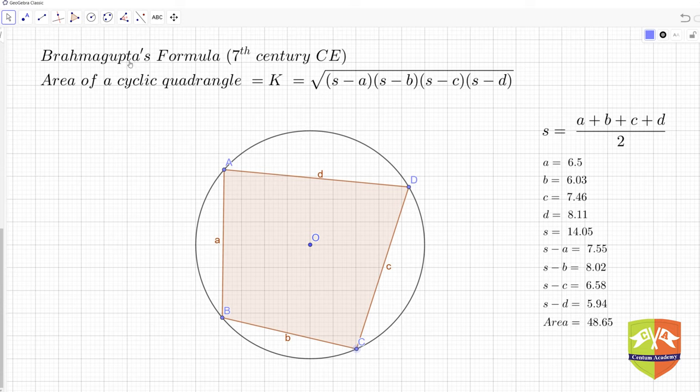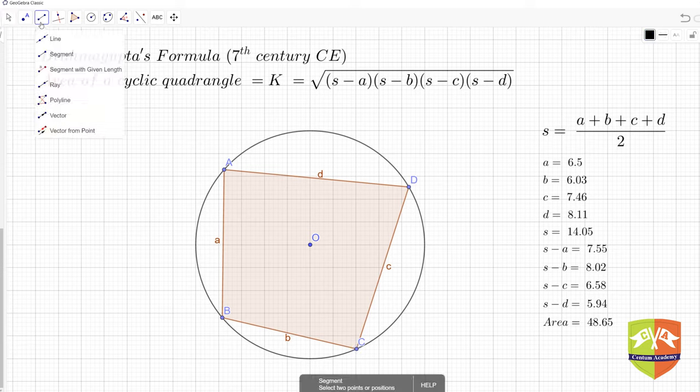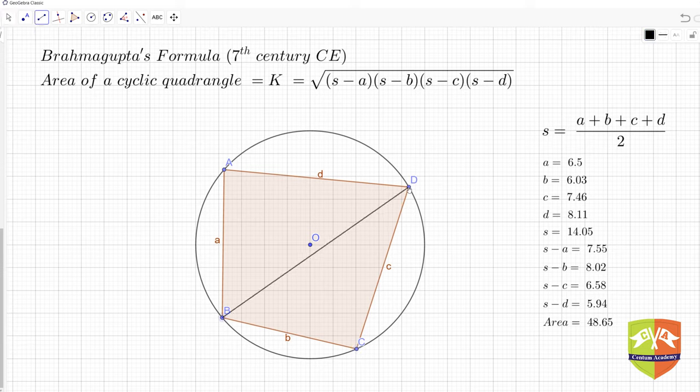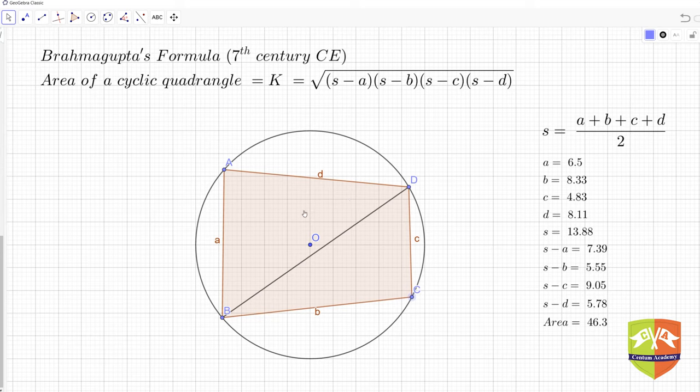Let us try to find the area of this quadrilateral from other mechanisms we have studied. We can split this quadrilateral into two halves. If I join diagonal BD and find the individual triangle ABD's area and triangle BCD's area and add them, it should match the value from Brahmagupta's formula. For that I need to drop perpendiculars from A and C to find the altitudes.